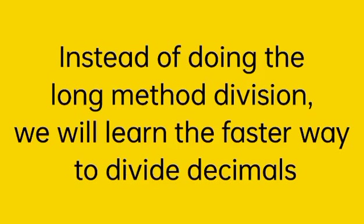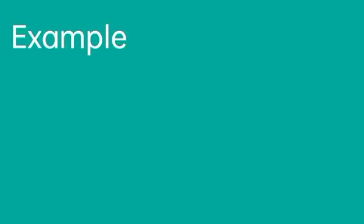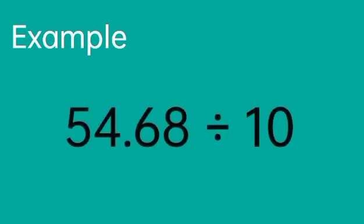Instead of doing the long method of division, we will learn the faster way to divide decimals by 10, 100, and 1,000. For example, 54 and 68 hundredths divided by 10.